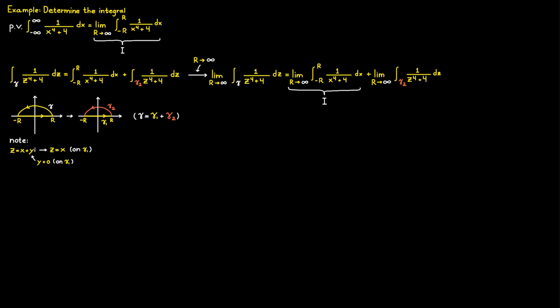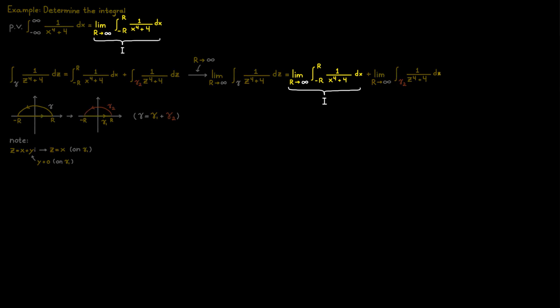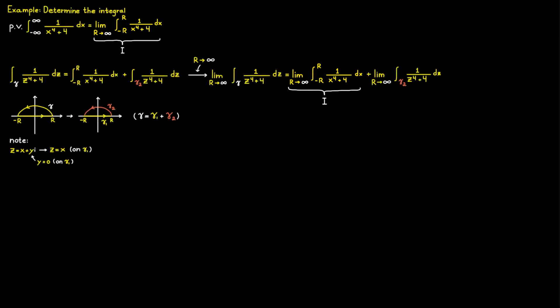We have managed to create the same expression as the one we are looking for. If we can solve this equation by determining the two other limits, we can get a value for the expression i. We determine the first limit by applying Cauchy's residue theorem to the integral and then taking the limit. We can use Cauchy's residue theorem here because our contour gamma is closed, which is one of the reasons we structured our contour that way.